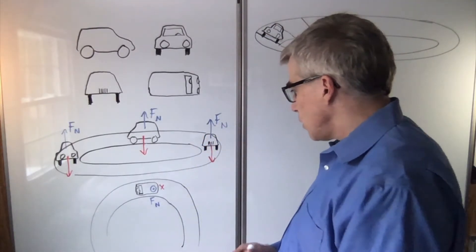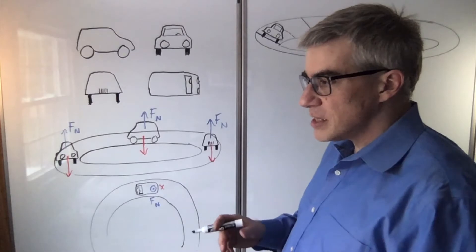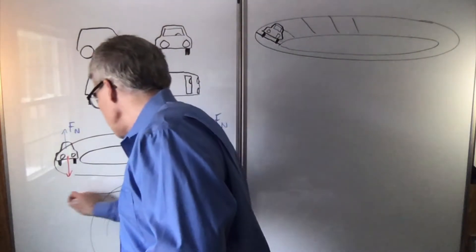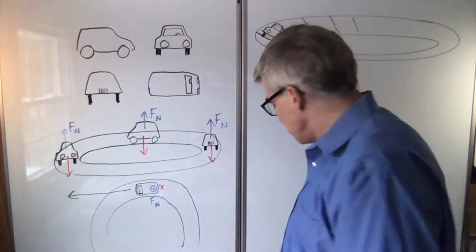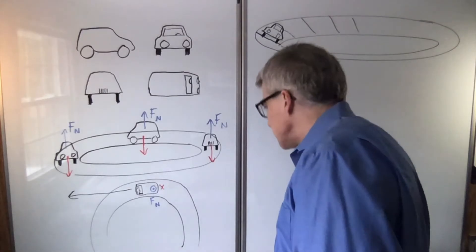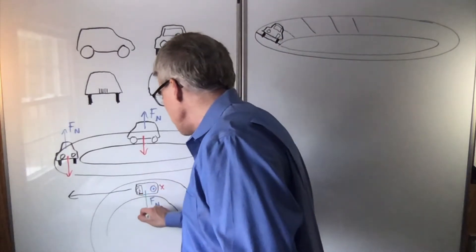Think about where the car would go if it suddenly hit an oil slick. It would go straight like that. Friction must be stopping it from doing that. So friction must be pointed that way.